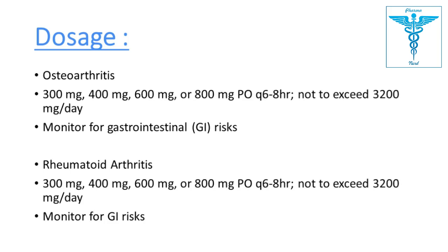For rheumatoid arthritis, the dosage is similar to that for osteoarthritis: 300, 400, 600, or 800 mg orally every six to eight hours, not exceeding 3200 mg per day. GI risk must be monitored.